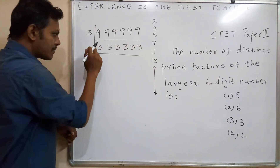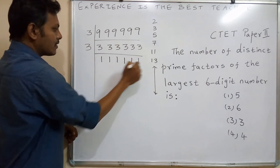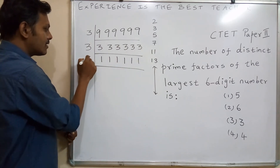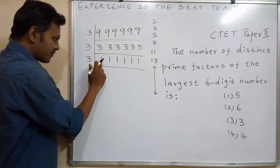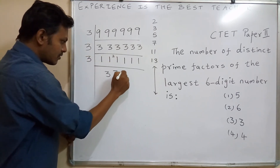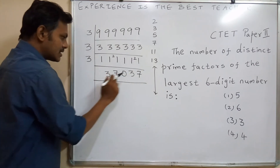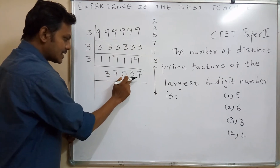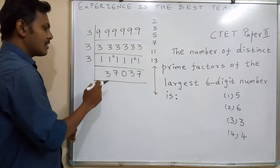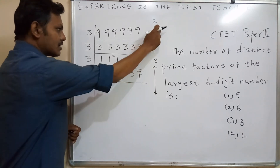We divide by 3 repeatedly. After the first division, the sum of the resulting digits is 18, which is also divisible by 3. After the second division, the sum is 6, still divisible by 3. After three divisions by 3 we obtain 37,037. Checking the unit digit — it is 7, not 0 or 5 — so 37,037 is not divisible by 5.